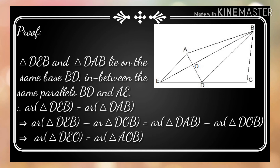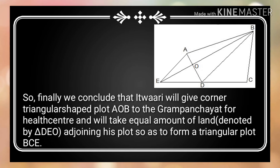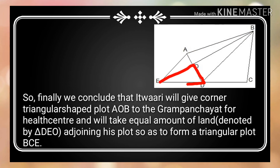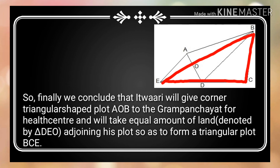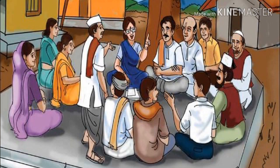Hence, we have proved that area of DAO equals area of AOB. This implies that Etwari will give the corner triangular plot AOB to the gram panchayat for the health center, and in return receives an equal amount of land denoted by triangle DAO adjoining his plot, so as to form a triangular plot BCE. This is how we solve the problem for the panchayat.